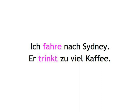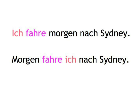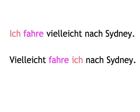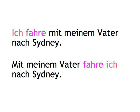'I drive to Sydney. He drinks too much coffee.' But unlike in English, this is an ironclad rule in German. So if we put something other than the subject at the beginning of a sentence for emphasis — like 'morgen,' 'vielleicht,' or 'mit meinem Vater' — the subject makes way, moving after the verb. As you can see, the first element or idea can consist of several words, like 'mit meinem Vater.' So the verb is not necessarily the second word, but the second element of the sentence.